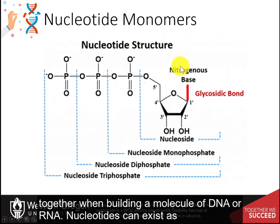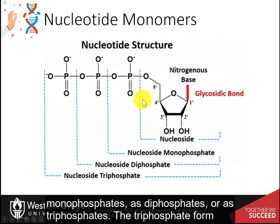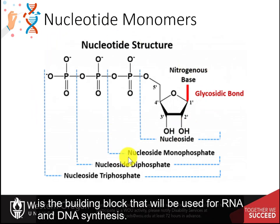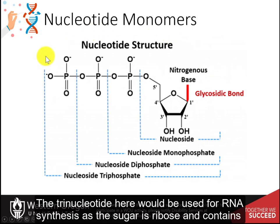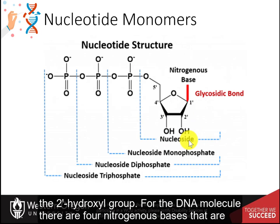Nucleotides can exist as monophosphates, as diphosphates, or as triphosphates. The triphosphate form is the building block that will be used for RNA and DNA synthesis. This trinucleotide would be used for RNA synthesis, as the sugar is ribose and contains the two prime hydroxyl group.